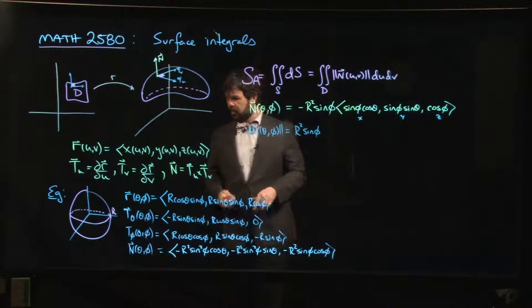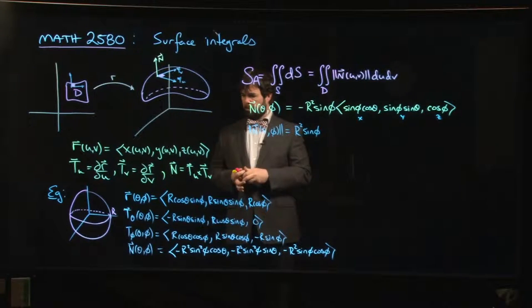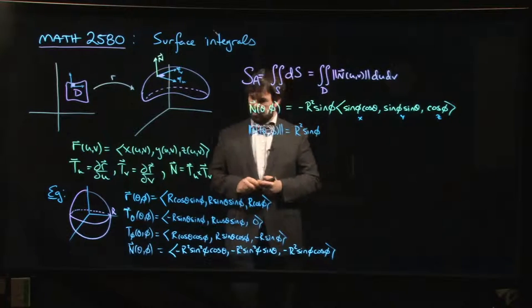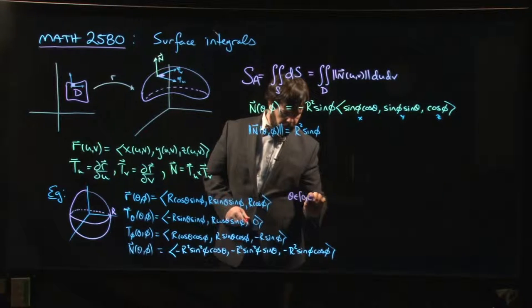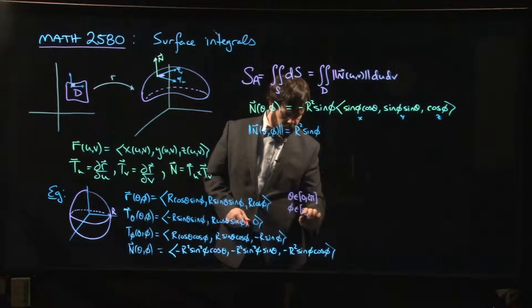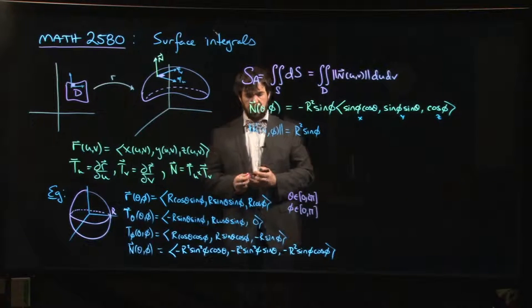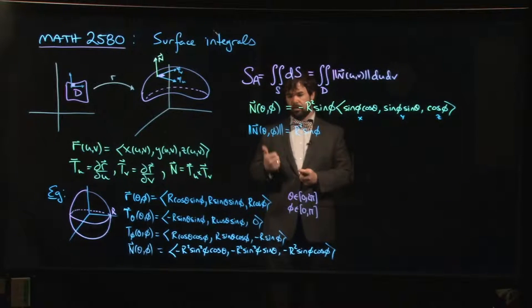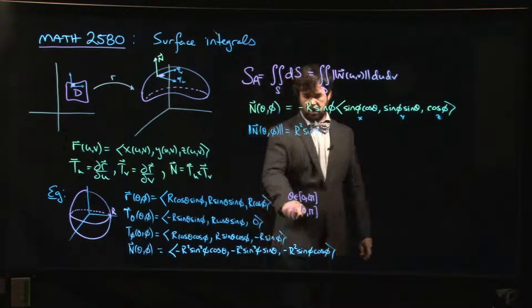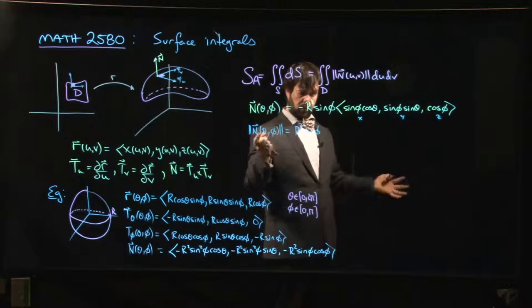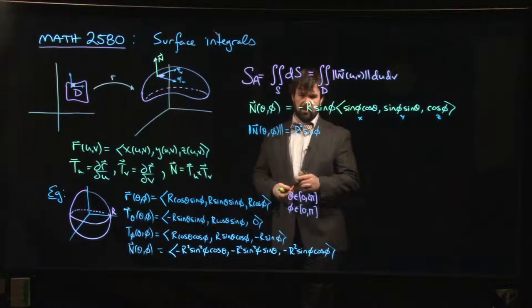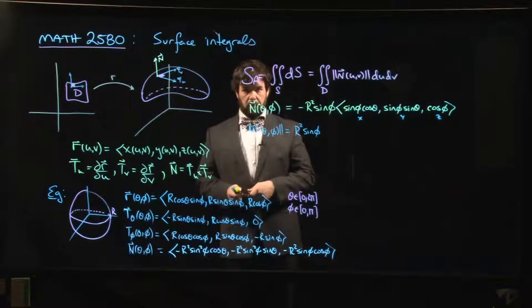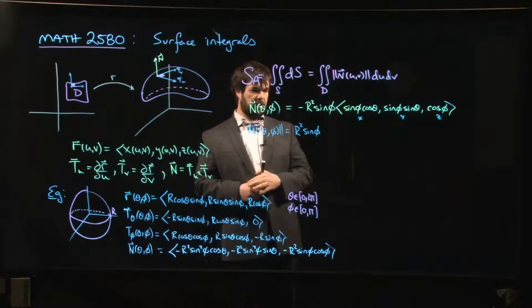Now, of course, sine could be negative, so that's something that we should probably worry about. But remember that with this parametrization, theta runs from 0 to 2 pi, but phi just goes from 0 to pi. And sine is positive between 0 and pi. For phi between 0 and pi, sine phi is positive, or at least non-negative. So this is indeed the magnitude. This will always be positive over our parameter domain.